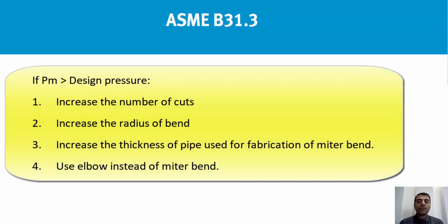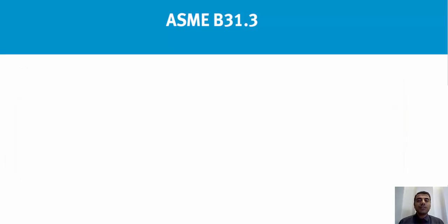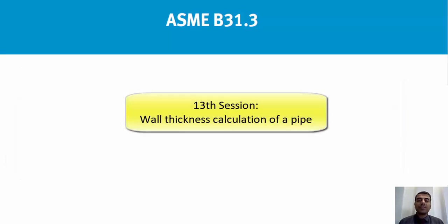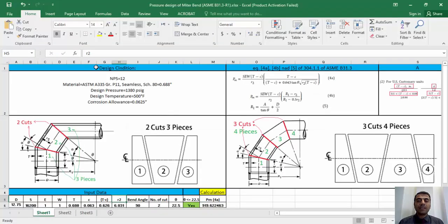We compare Pm with the design pressure. If Pm is less than the design pressure, we cannot use this miter bend. Otherwise we should choose one of the following solutions: one, increase the number of cuts; two, increase the radius of the bend; three, increase the thickness of the pipe used for fabrication; or four, use an elbow instead of a miter bend.